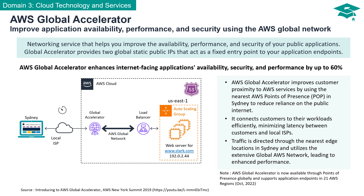AWS Global Accelerator enhances the availability, security, and performance of Internet-facing applications, often delivering up to 60% improvement. This service optimizes customer proximity to AWS services by leveraging the nearest AWS points of presence — for example, in locations like Sydney — significantly reducing dependence on the unpredictable public Internet. Global Accelerator efficiently connects customers to their workloads, minimizing latency between customers and local Internet service providers. Traffic is intelligently directed through the closest edge locations, leveraging the extensive global AWS network, resulting in significant performance enhancements and a smoother, faster experience for end-users.